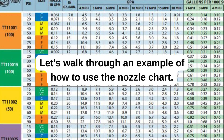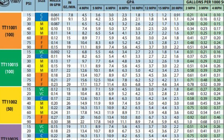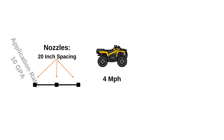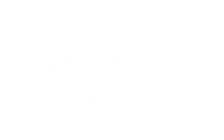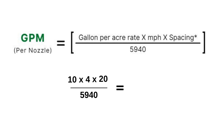Let's walk through an example of how to use the nozzle chart. You have an ATV sprayer boom with three nozzles spaced 20 inches apart. Your desired speed is 4 miles per hour and your application rate is 10 gallons per acre. We can use this information to find out the nozzle size you need — just plug these numbers into a simple formula.